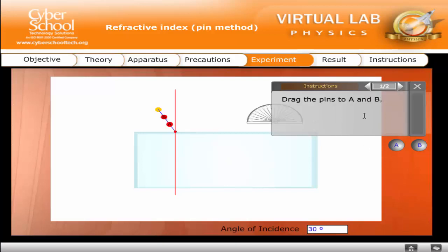Drag the pins to A and B. Click Next. This gives a 3D view of the pins from the other side.